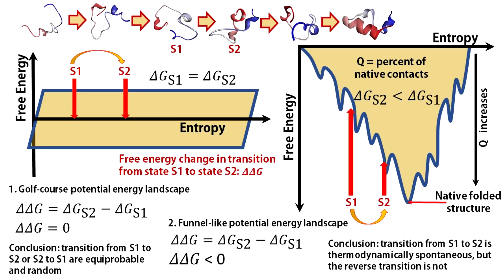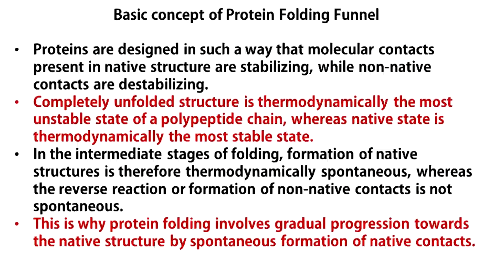Let us get back to the transition from S1 and S2 again, but this time for funnel energy landscape. S2 has higher q, that is, higher fraction of native contacts than S1. So, S2 is more stable. This time, delta G of S1 to S2 transition becomes negative, which means this transition is spontaneous, while the reverse transition, that is, S2 to S1 is not spontaneous. So, in funnel-like energy landscape, progress towards the native structure involves formation of a higher fraction of native contacts, which is spontaneous in nature.